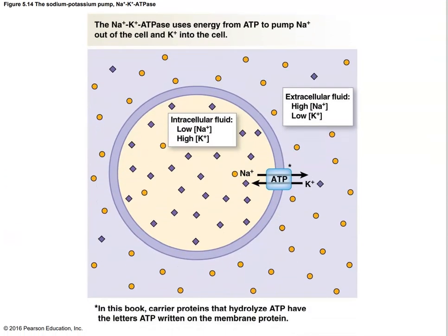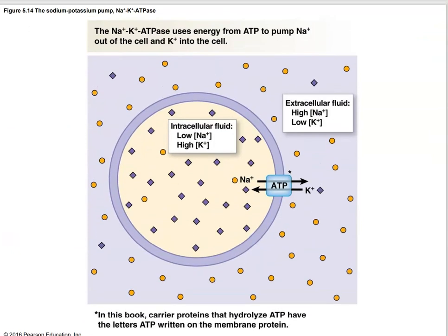Here is the action of the sodium-potassium pump: it pumps sodium to the outside of the cell. We're grabbing onto three sodiums for every two potassiums that come in — three sodiums are pushed out for every two potassiums coming in.